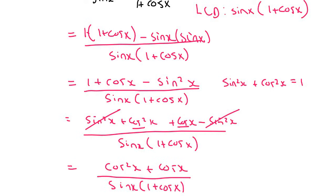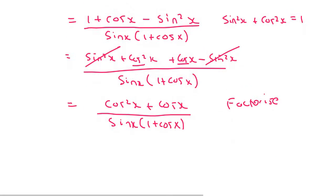Our next step when we have a situation like this is to factorize. Now the bottom part is already factorized, but if it wasn't, you would then factorize it. But we can factorize the top. We can take out a cos x, and then we'd be left with cos x plus 1, and then at the bottom, we have the same.